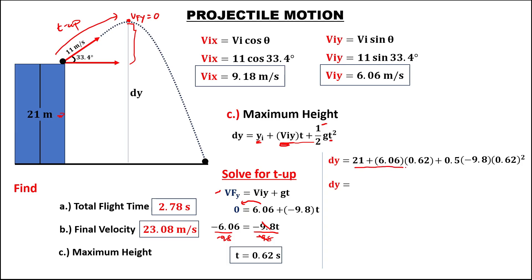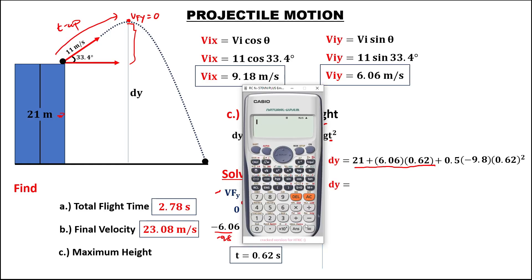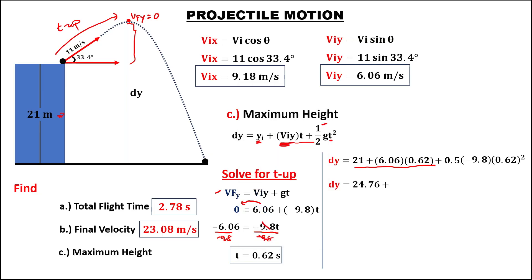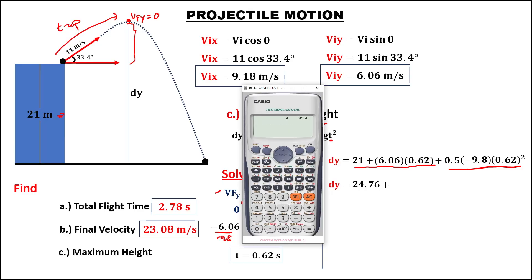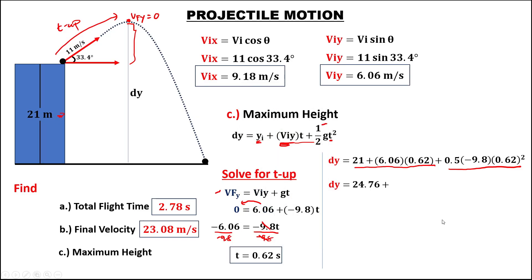To find the maximum height: 21 plus 6.06 times 0.62, plus 0.5 times negative 9.8 times 0.62 squared. Simplifying: 21 plus 6.06 times 0.62 equals 24.76. Then 0.5 times negative 9.8 times 0.62 squared equals negative 1.88. So the maximum height equals 24.76 plus negative 1.88, which equals 28.88 meters. This is the maximum height.